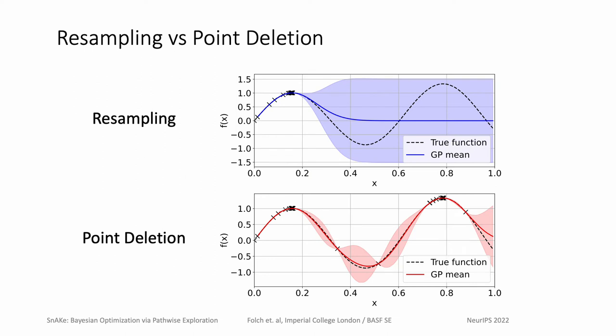We propose a solution to this problem, which we call point deletion. We use sampling to get a measure of excess exploitation, and then we remove it. More details about point deletion and why it is needed can be found in the paper.